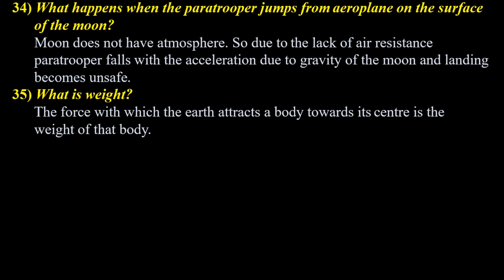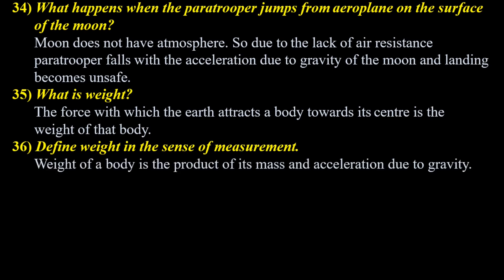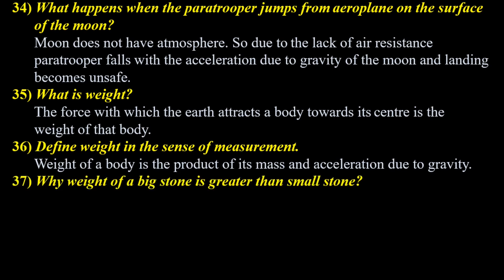The force with which a body is attracted towards the center of the Earth is the weight of that body. In the context of measurement, weight of a body is the product of its mass and acceleration due to gravity — that is W = mg. If mass is more, weight will also be more. Why is the weight of a big stone greater than that of a small stone?